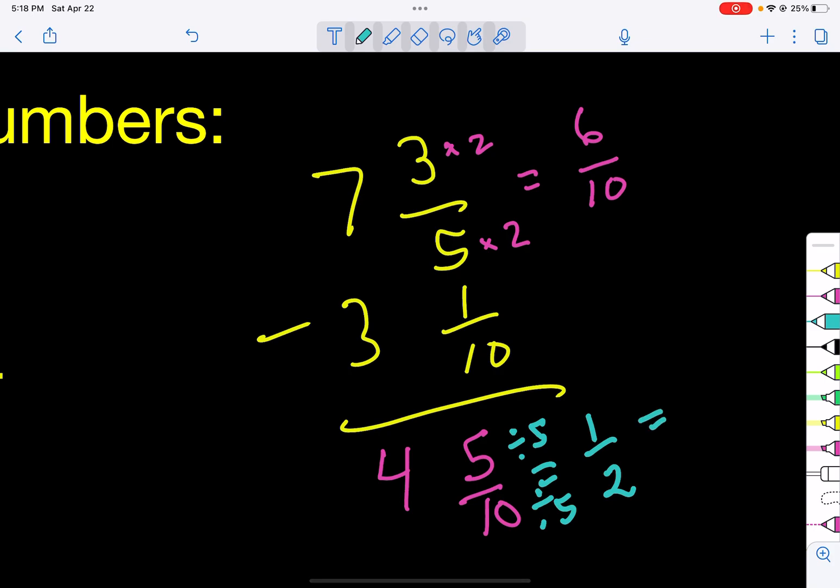So you get a final answer of 4 and 1 half. So that is how you subtract mixed numbers if you have to get a common denominator.